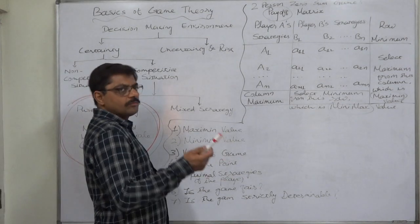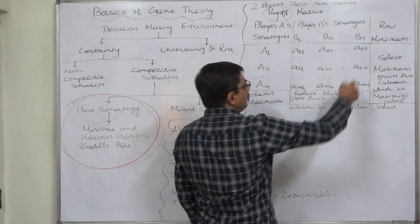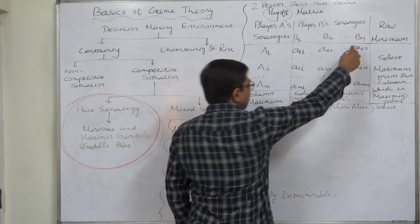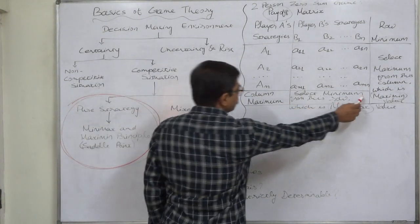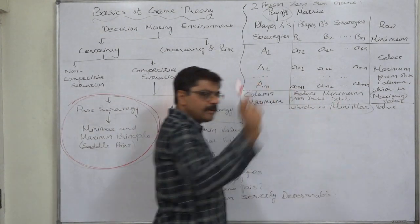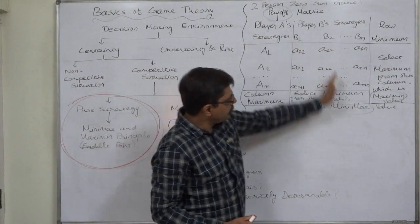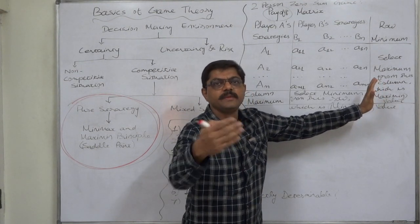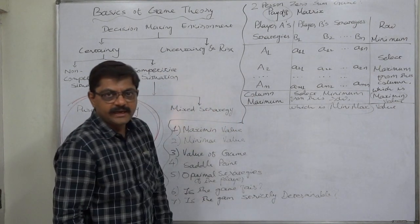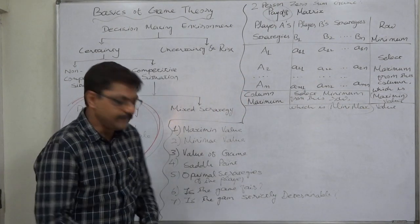Similarly, from the opponent's point of view, find out the maximum values from each column — that means each of B's strategies — and write them in this row. Now find out the minimum value out of these maximum values. First find out the maximum value from each column, then find out the minimum out of them. In short form, it is called minimax — minimum of the maximum — it is called the minimax value.